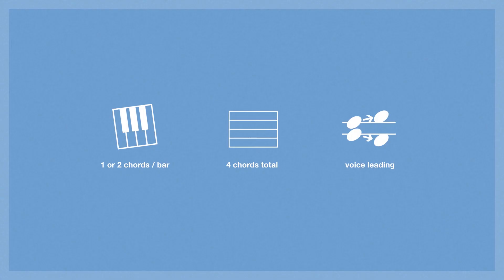Last week we talked about using only one or two chords per bar. This time we're going to talk about using four chords in total. So really what we want is to create a two or four bar section — two bars if we have two chords per bar, and a four bar section if we have one chord per bar. We're always thinking in multiples of four when it comes to songwriting.